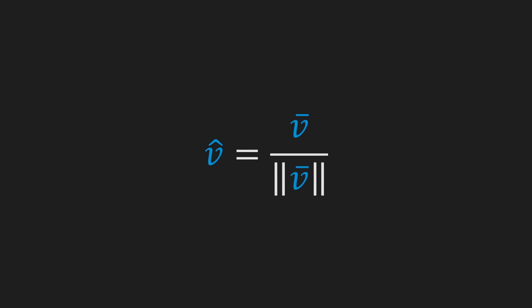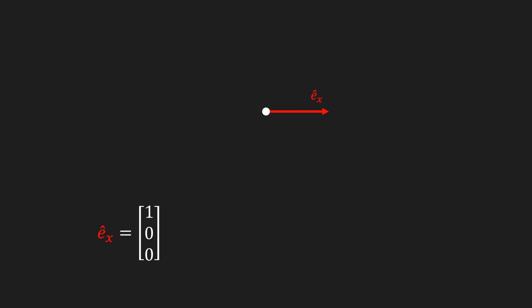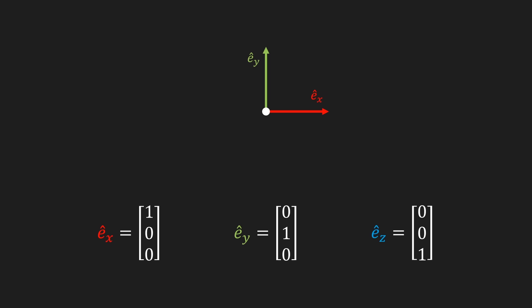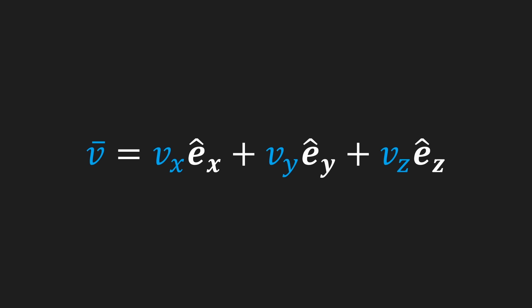We also define a few standard unit vectors: ê_x which is a unit vector along the x-axis, ê_y which is a unit vector along the y-axis, and ê_z which is a unit vector along the z-axis. Using these unit vectors we can introduce an alternative way to write vectors, and that is to write them as the sum of their components multiplied by the respective unit vector. We call this unit vector notation, and we'll need it in just a bit, but first we're going to discuss two ways in which we can multiply vectors.